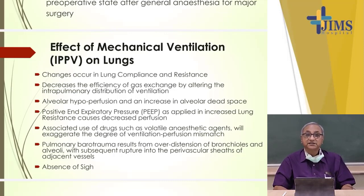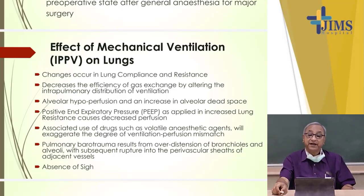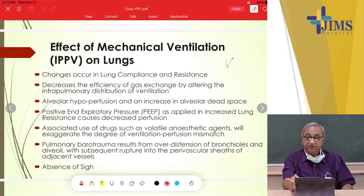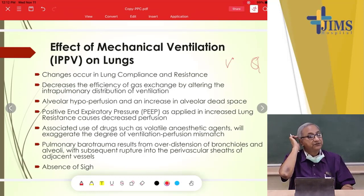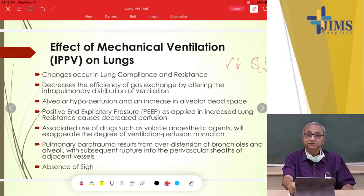Associated use of volatile anesthetic agents — halothane, sevoflurane, isoflurane — given during general anesthesia will exaggerate the degree of ventilation-perfusion mismatch. Ventilation is V and perfusion is Q, and there is a definite ratio between them. When ventilation decreases, perfusion decreases, oxygenation of the blood also decreases — this is called ventilation-perfusion mismatch.